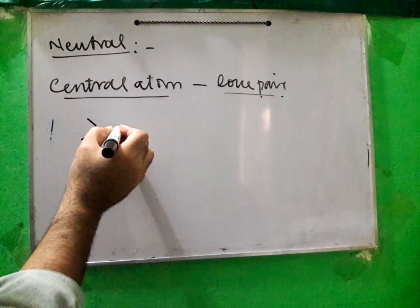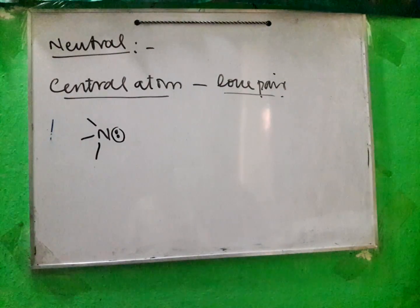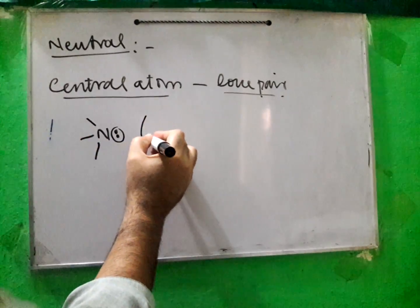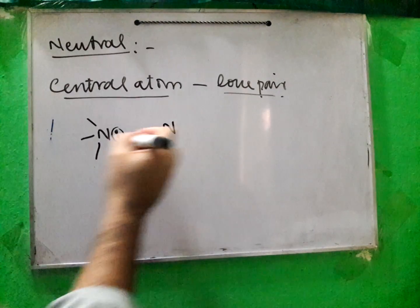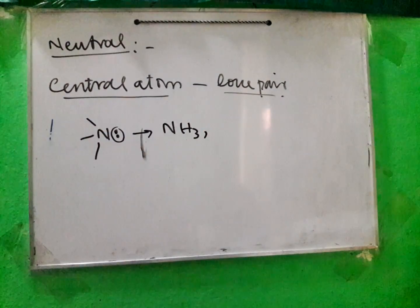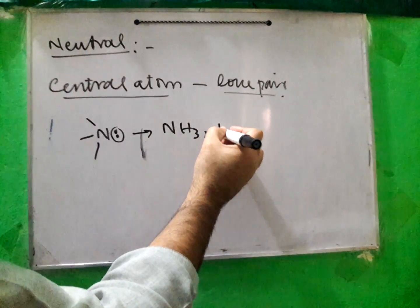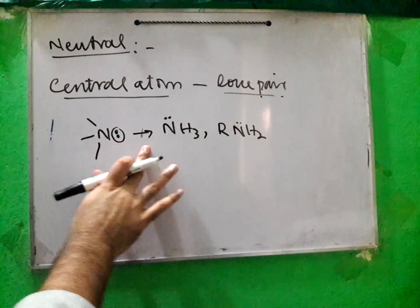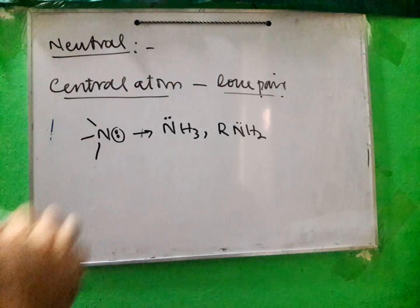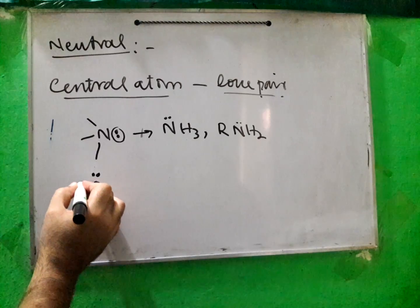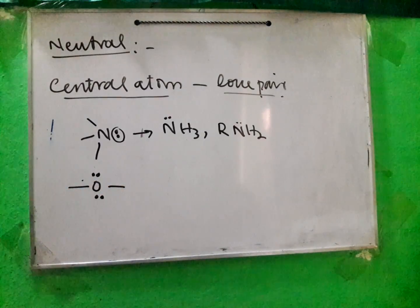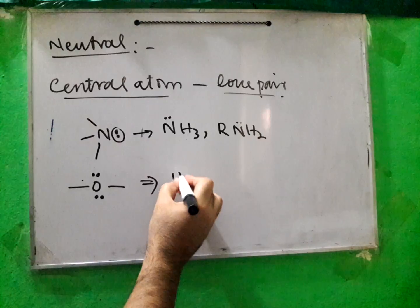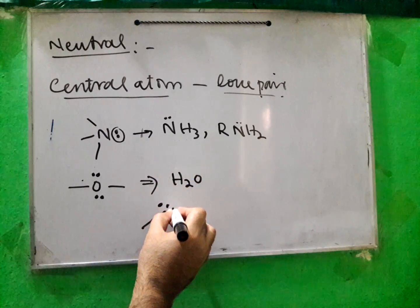If the lone pair of electron is available for donation, it means this is a nucleophile. Examples include NH3 and RNH2 — nitrogen with three bonds and a lone pair of electron. If there is oxygen, it has two lone pairs of electrons and two bonds — a very famous example is H2O. H2O has two lone pairs of electrons. The question is: is H2O monodentate or bidentate as a nucleophile?